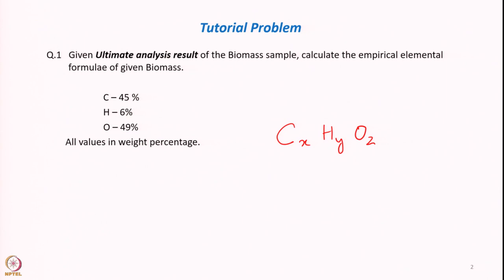For simplification, this empirical formula helps us. We get a uniform empirical formula for a given biomass or coal that tells us how many moles of hydrogen or oxygen are present per unit of carbon in that sample. This is useful for many studies, especially when looking into kinetics, reactions, and outputs such as water-gas shift reactions.